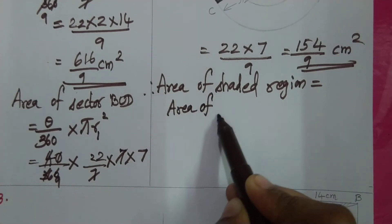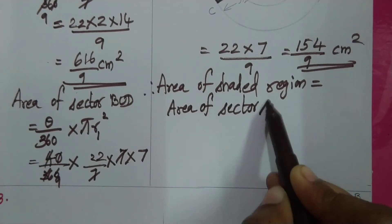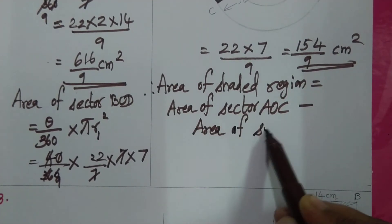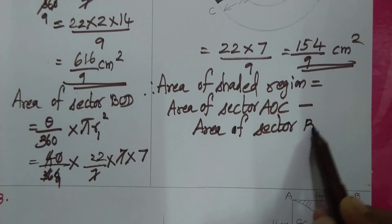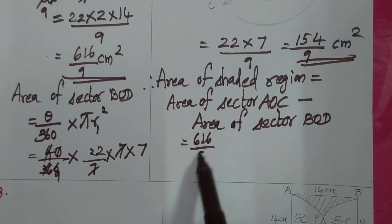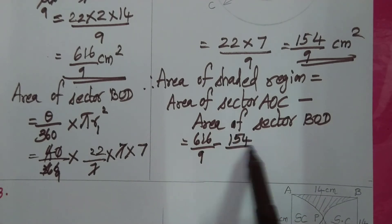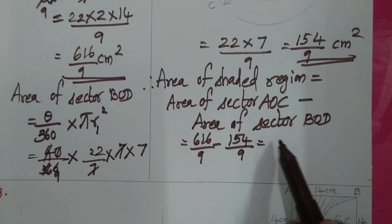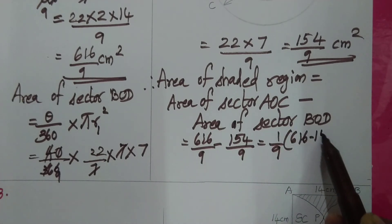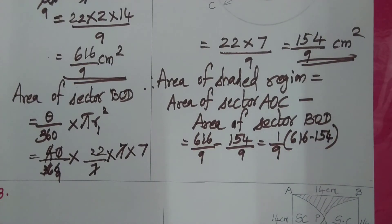Area of sector BOD simplifies to 154 by 9 cm². Shaded area equals area of sector AOC minus area of sector BOD. So that is 616 by 9 minus 154 by 9. Taking 9 as common denominator, we compute 616 minus 154, which equals 462. So the result is 462 by 9.